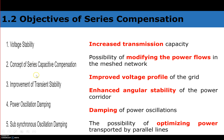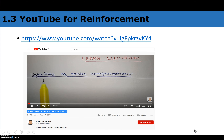The objectives of series compensation include: improving voltage stability and power transferring capability, improving transient stability, damping power oscillations, and damping sub-synchronous oscillations. It can increase transmission capacity, modify power flows in a mesh network (since changing reactance of one line changes power flow through all connected systems), improve voltage profile, enhance angular stability, and optimize power flow transmitted by parallel lines.